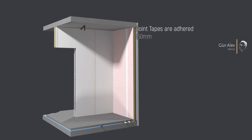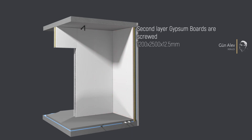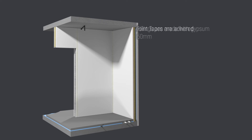Joint tapes are adhered and gypsum fillings are made. Second layer gypsum boards are screwed. Joint tapes are adhered again and gypsum fillings are completed.